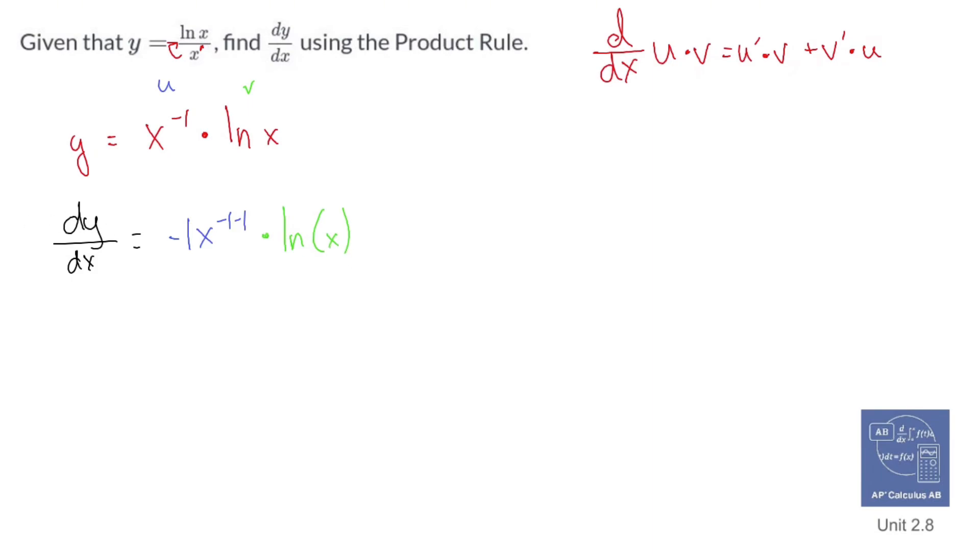Now we're going to add the derivative of the second function. The derivative of ln of x is one over x. Multiply that to the first function as is, the original u, which is x to the negative one.